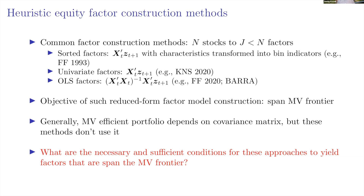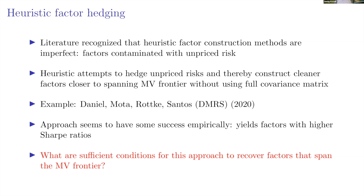Generally, we would lose some efficiency in that reduction, so there must be conditions that have to be satisfied. The literature recognizes that heuristic factors are imperfect — contaminated with unpriced risk — because they don't use the full covariance matrix. A notable paper addressing this is Daniel, Mota, Rottke, and Santos (2020), who introduced a hedging approach. The second question we ask is: how does that hedging approach work within this framework and what are the sufficient conditions for it to work?